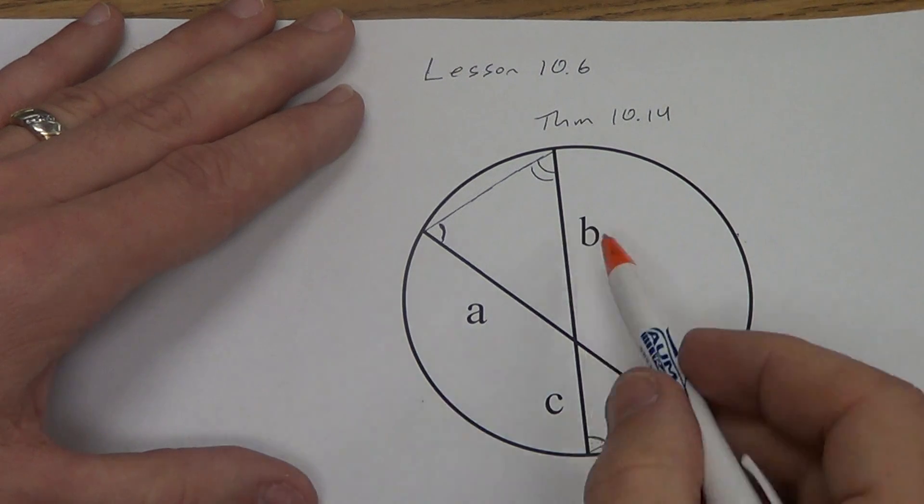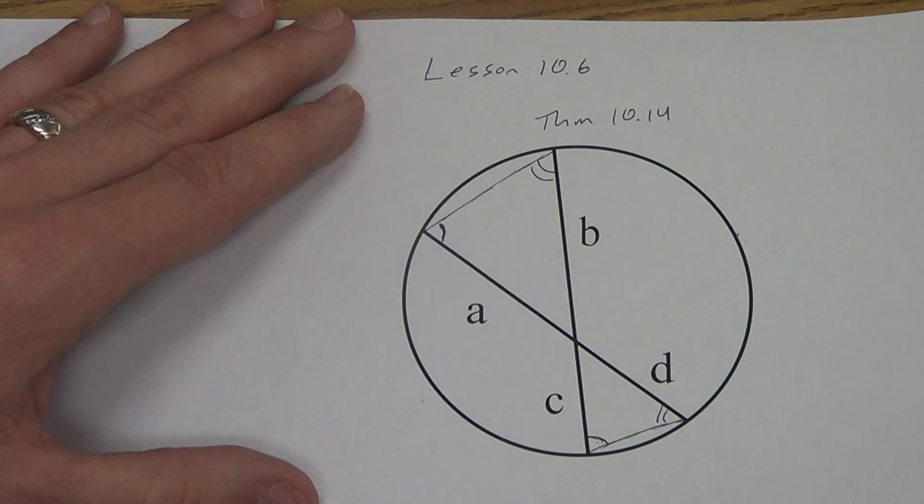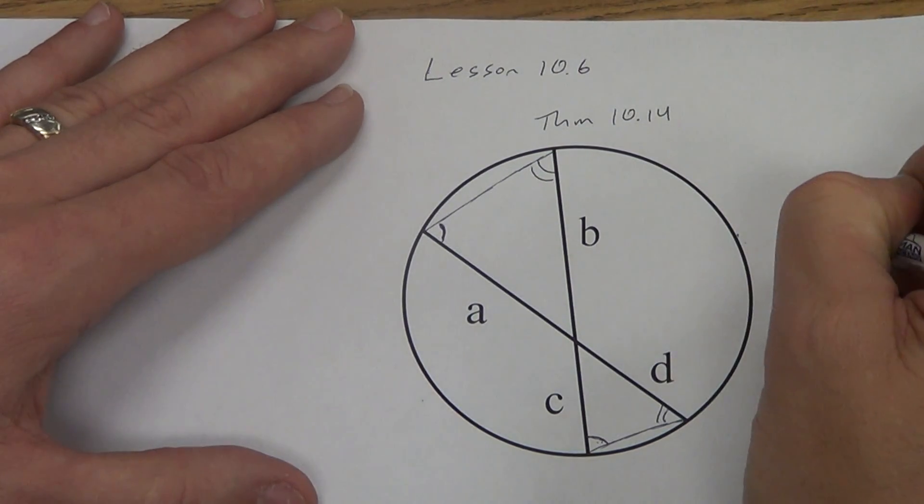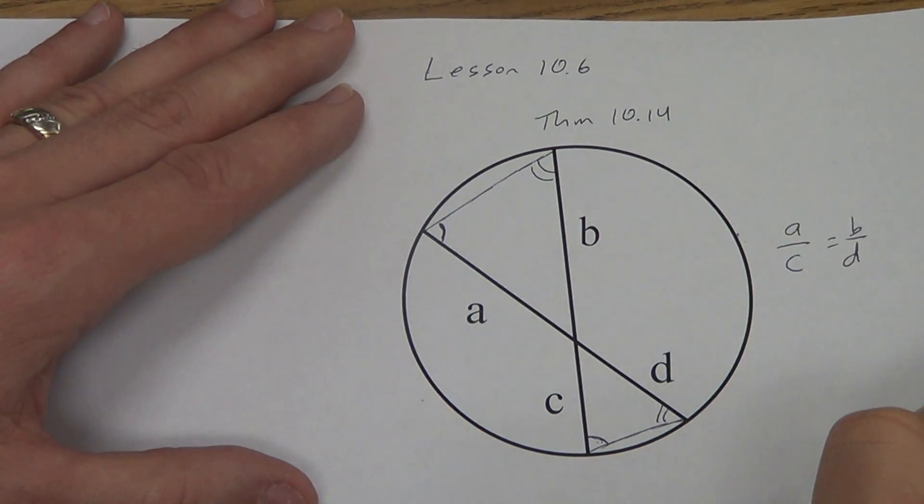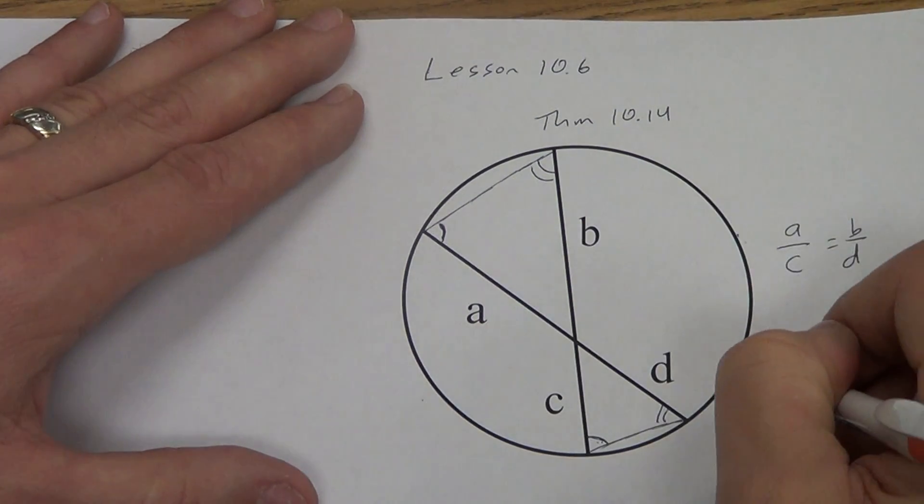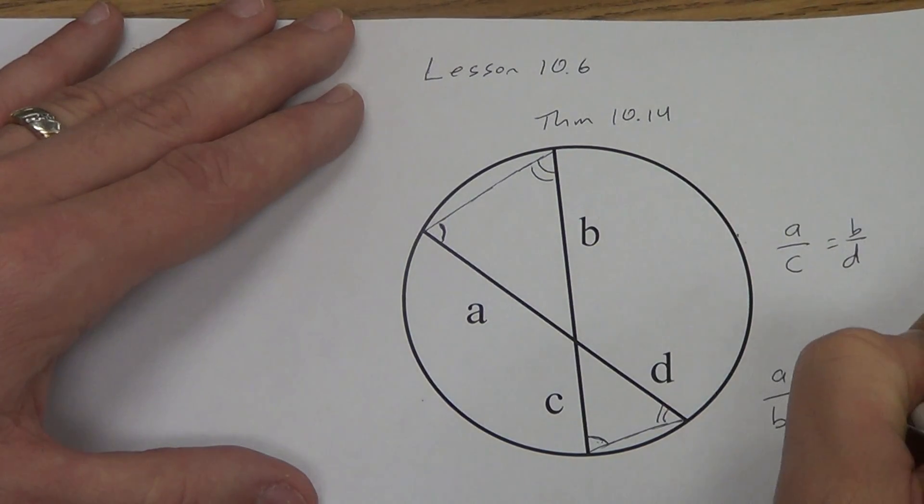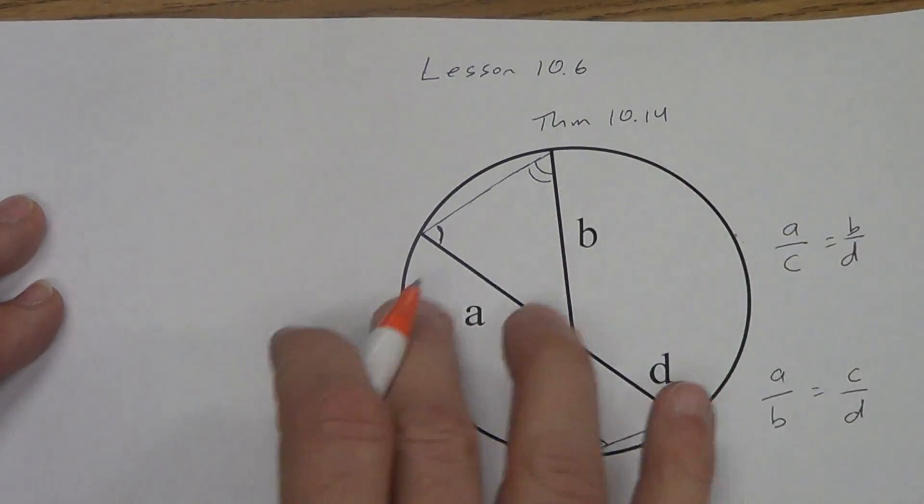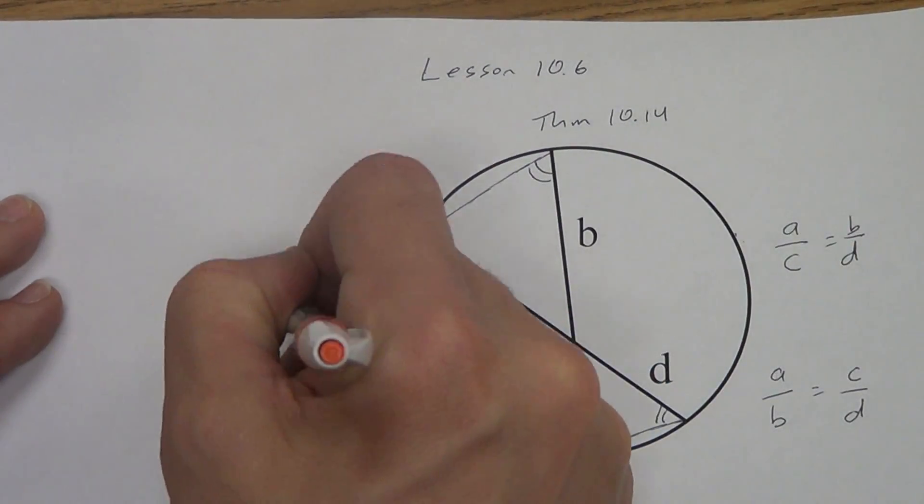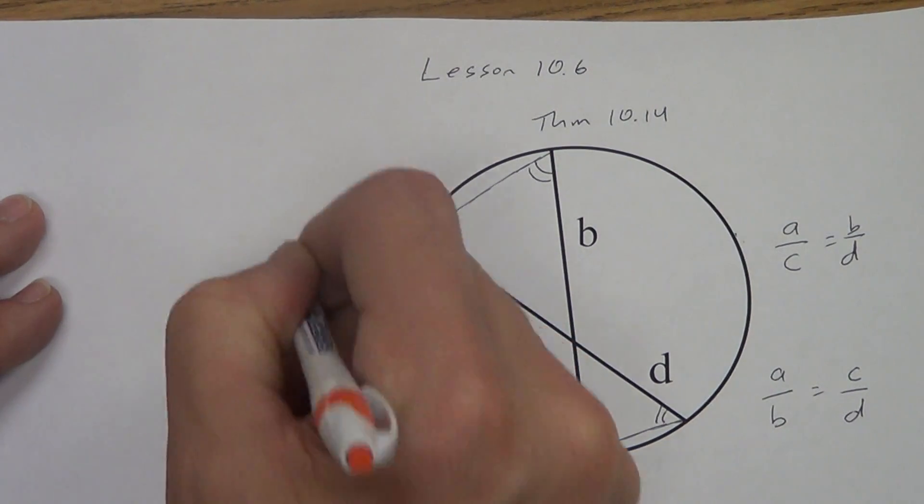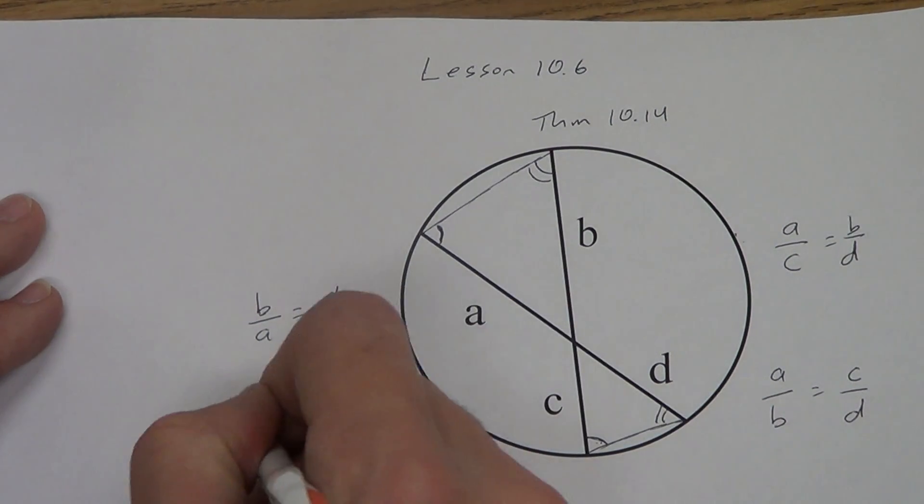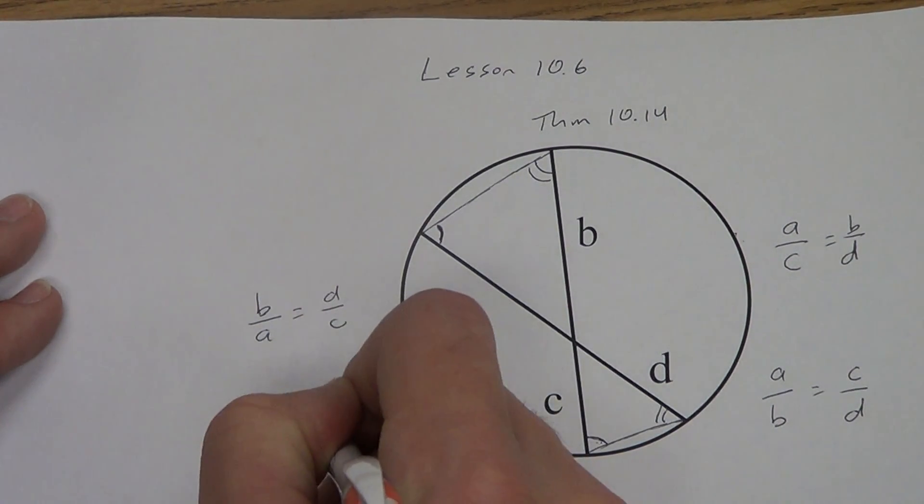As soon as I have similar triangles, what can we do with the sides? We can set up a proportion. So, you could do a over c equals b over d. Or, you could work this way: a over b equals c over d. Or, you could work this way from right to left: b over a equals d over c. You could stand on your head for all I care and do it upside down: c over a equals d over b. Any of them will work.